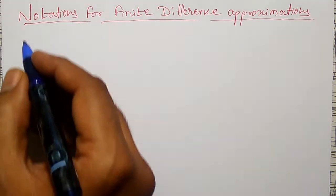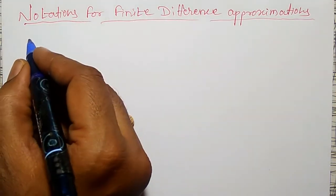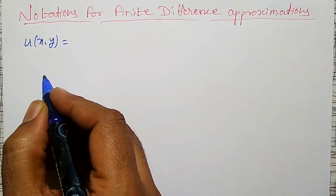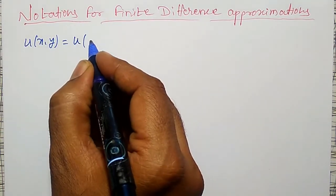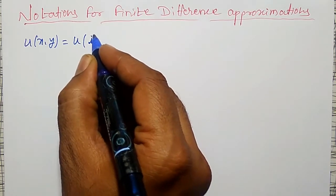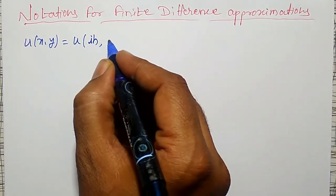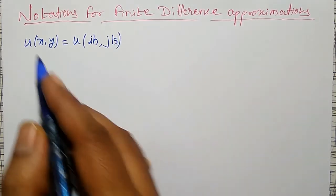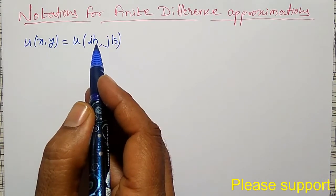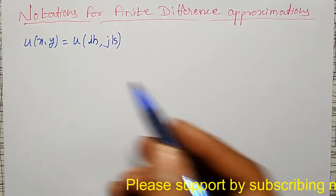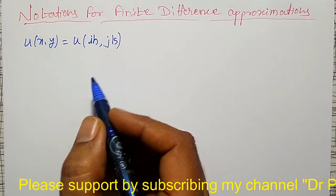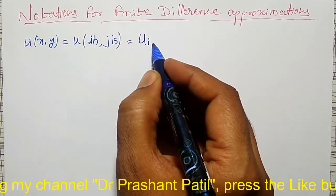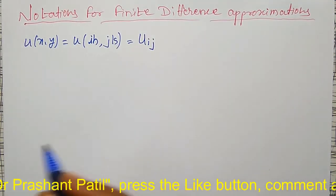Here I am using u of x, y as u of i times h and y as j times k. That means x is equal to i times h and y equals j times k. For this notation, I can write it simply as u_ij.